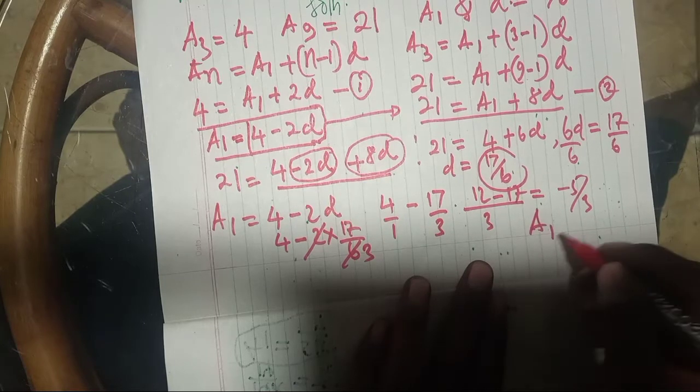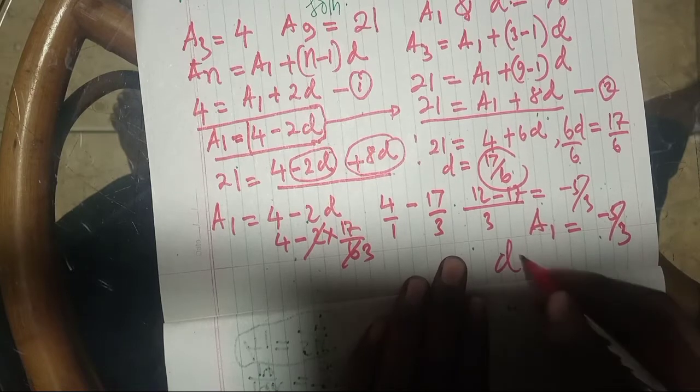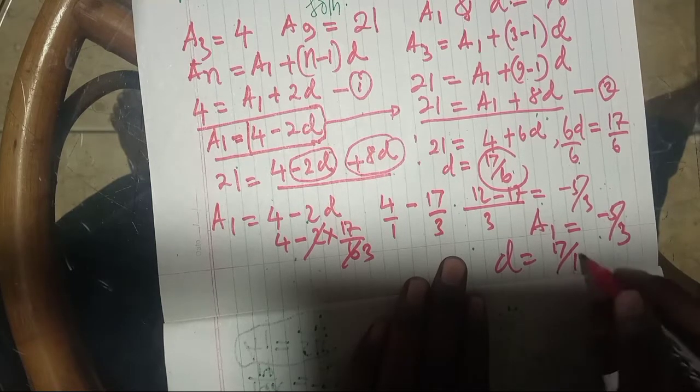Therefore, A1 will be negative 5 over 3, and D is 17 over 6.